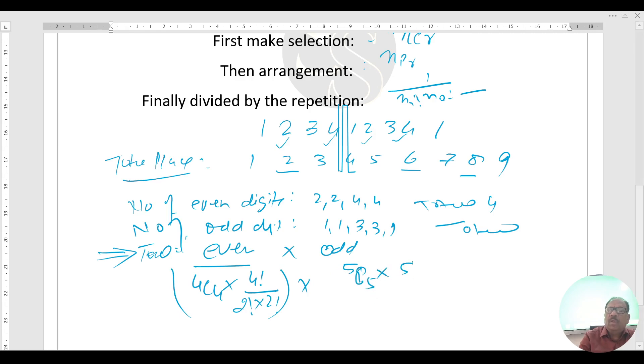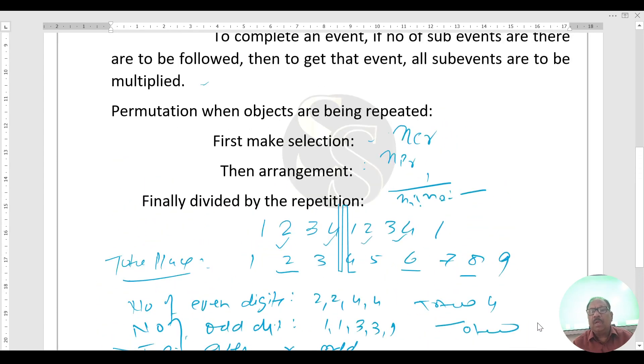Divided by the repetition 3 factorial into 2 factorial. On simplification, we get 6 into 10, that is 60 answer. On simplification we get answer 60.